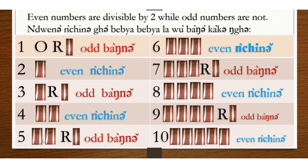5 is not divisible by 2. When you divide 5 by 2, you have a remainder of 1, so 5 is odd.